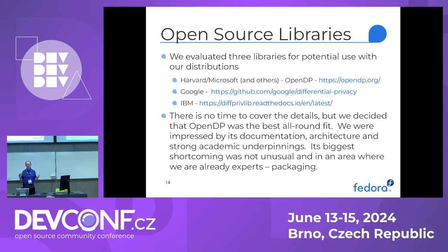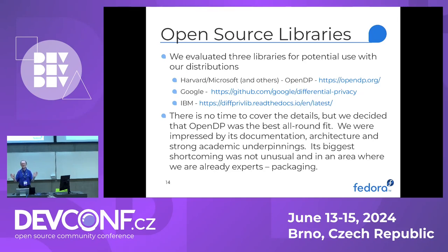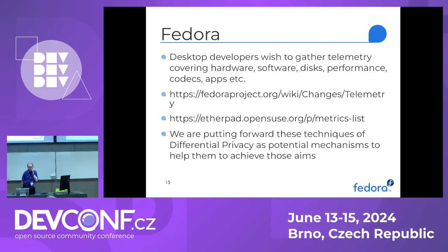We looked at three open source libraries — OpenDP, one from Google, one from IBM — and fairly easily settled on OpenDP as the most sophisticated. The idea is to get OpenDP into Fedora as the library people should be using for anything with differential privacy. It has all the algorithms and parameters, knows how to do the calculations, has a well-documented API, and is linked back to the original literature. Fedora — some of you may remember last autumn there was a push by desktop developers to collect telemetry data to help make decisions on the desktop. We're putting forward some of these techniques as potential mechanisms to help them achieve those goals.